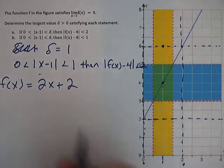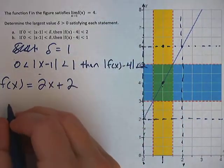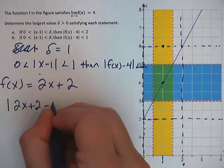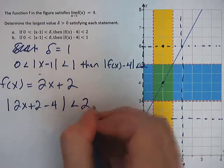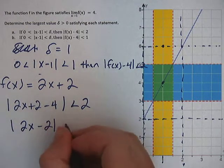So we have the function. We can plug that into this part right here in place of f of x. So we have the then part of the function, 2x plus 2 minus 4 is less than 2. That gives us absolute value of 2x minus 2 is less than 2.